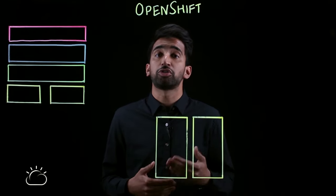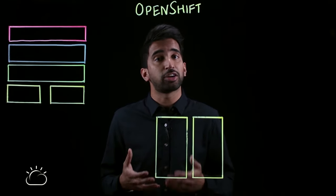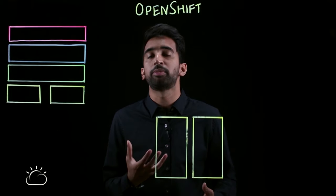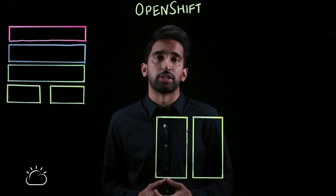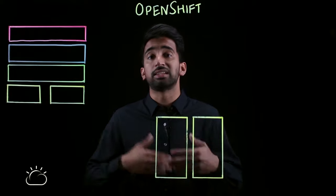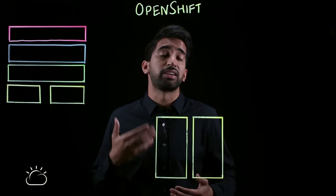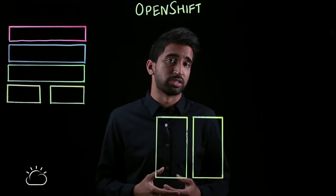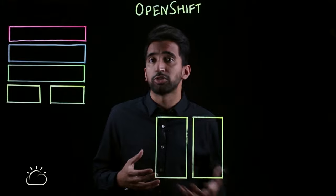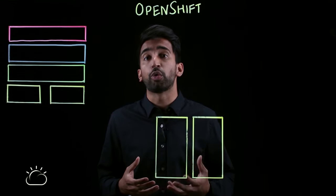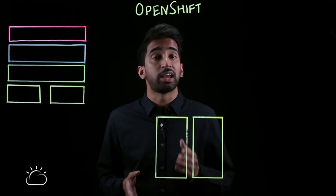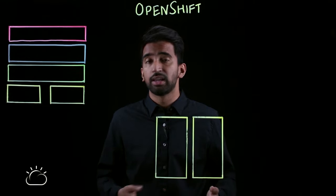OpenShift is a platform that allows you to run containerized applications and workloads, and it's powered by Kubernetes under the covers. Something I want to clear up right off the bat is the different flavors available with OpenShift. The open source project that actually powers OpenShift is called OKD, or Origin Kubernetes Distribution, and you can start with that for free today.